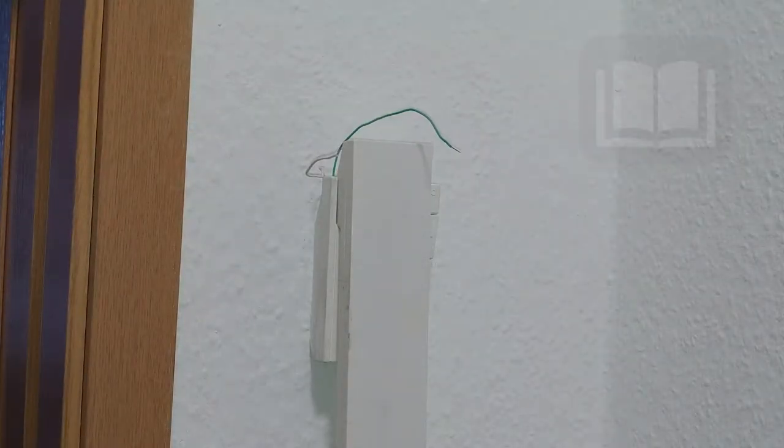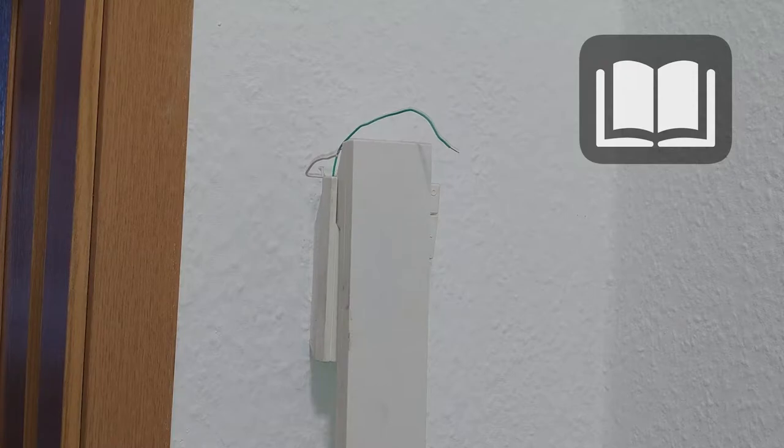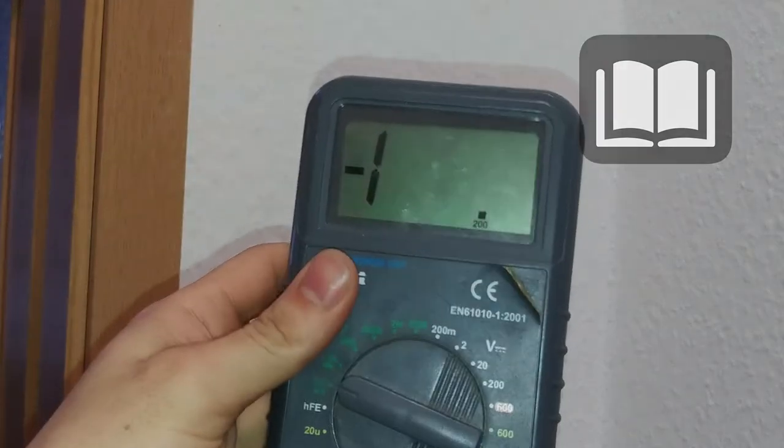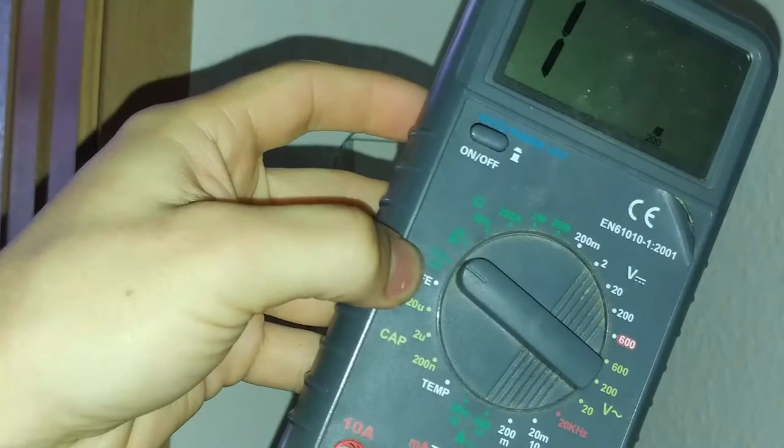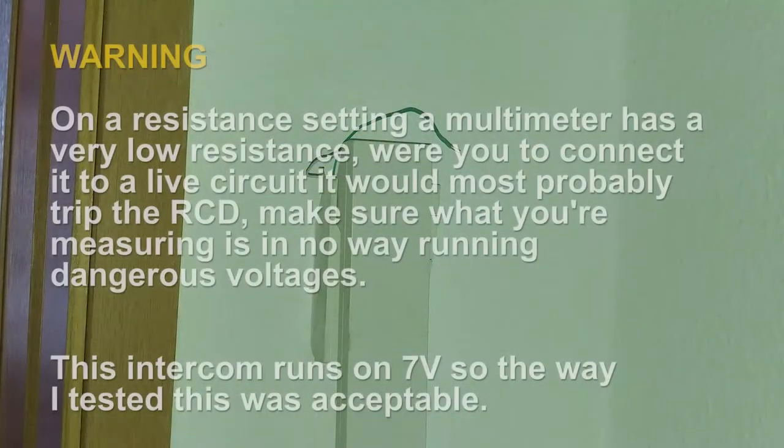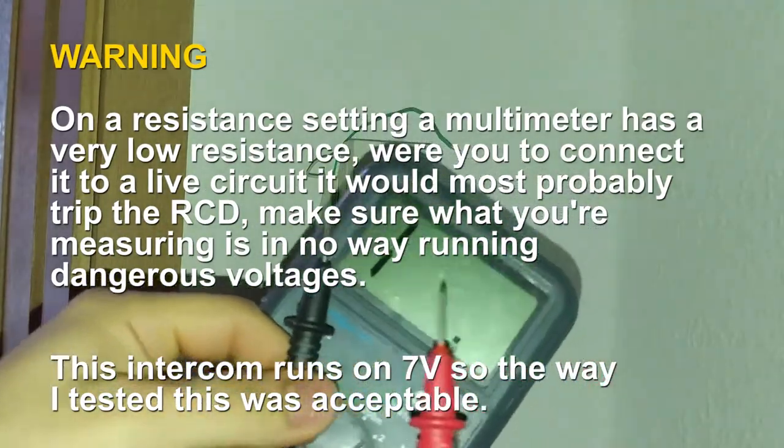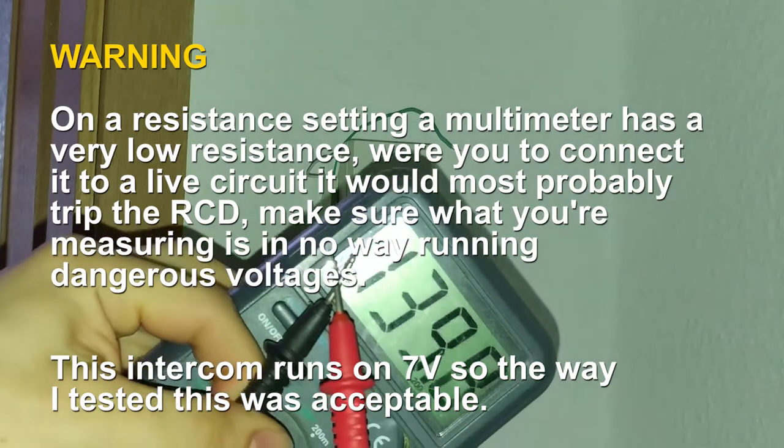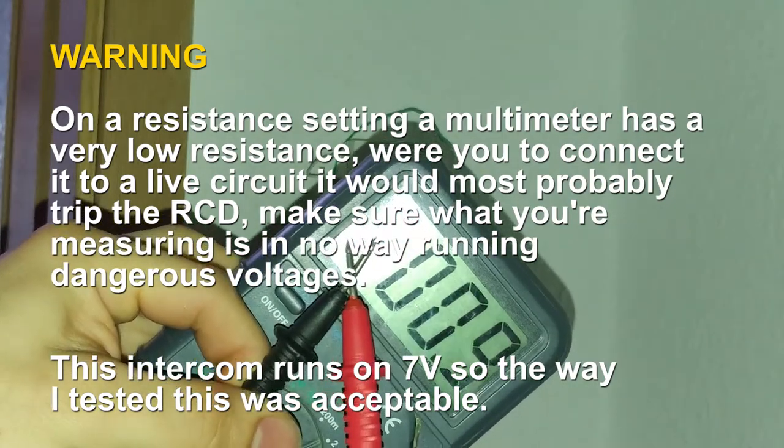To find this out you will either need to check the manual for your intercom or you will need a multimeter and set it to resistance, then measure the resistance between all wires and find out the one that goes to zero when the opening door button is pressed.